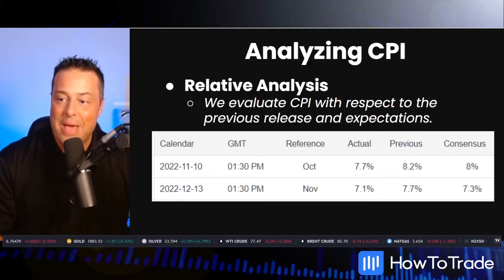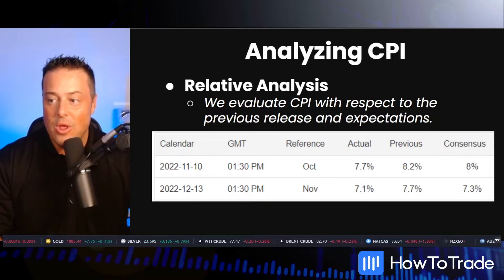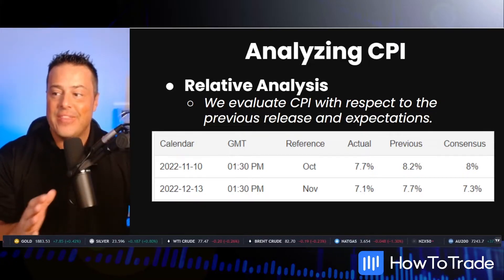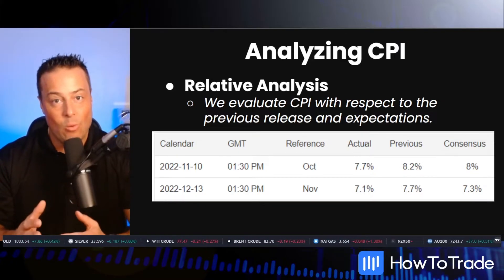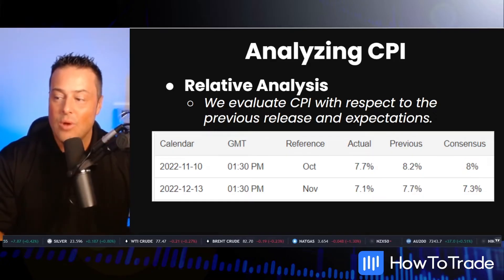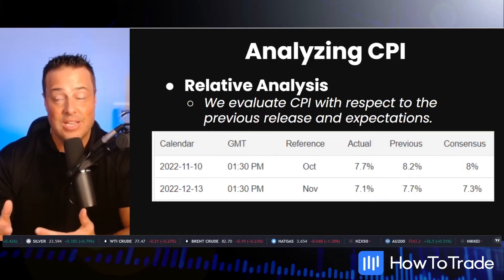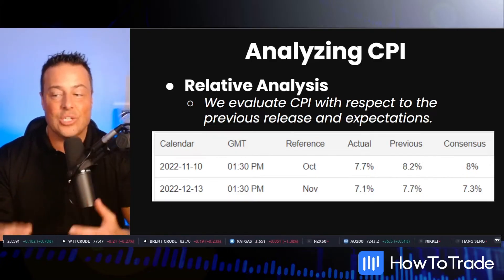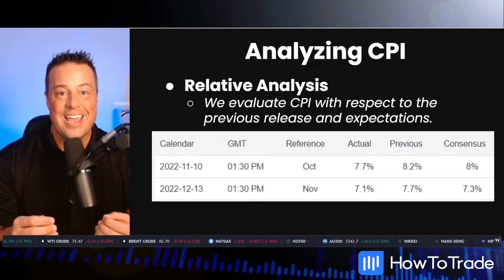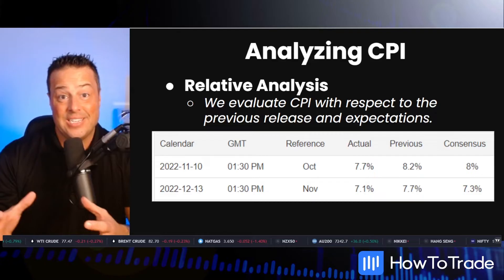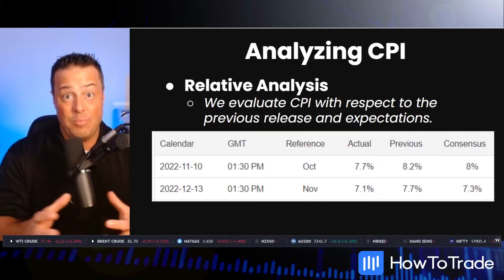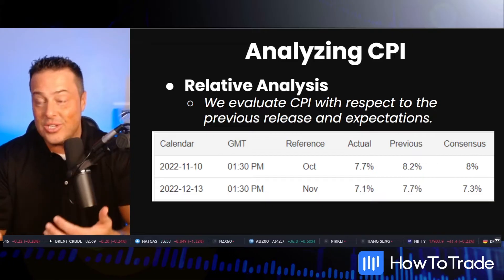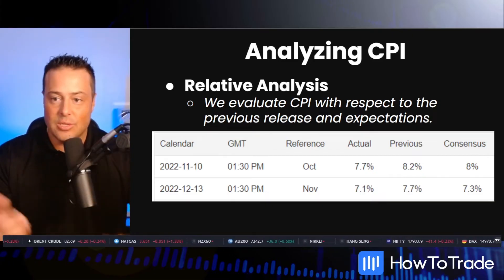As an example, you can see back in December, on the 13th of December, we had the release of November's CPI value. The actual number came in at 7.1%. Now that was well below the previous release, which was 7.7%, and consensus expectations of 7.3%. So in this case, we can definitively say that inflation did come down, CPI did pull back, and that was going to have an impact on the markets, as well as the US dollar and commodities really across the board.